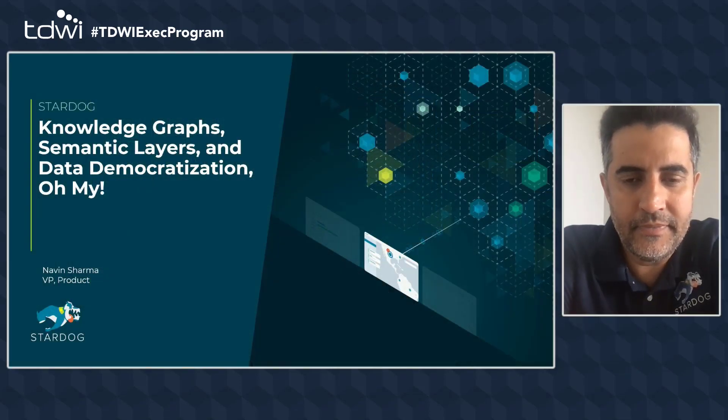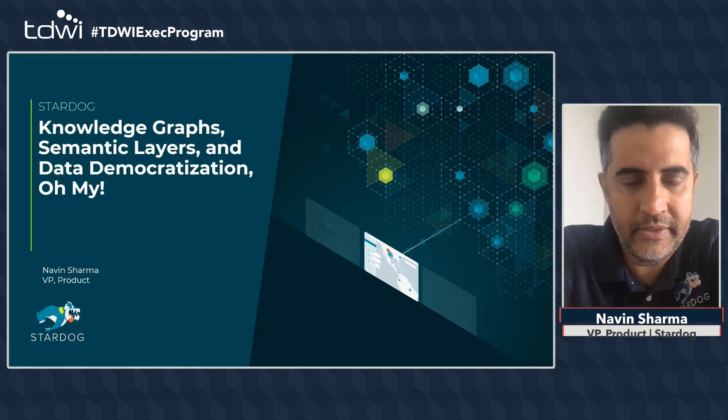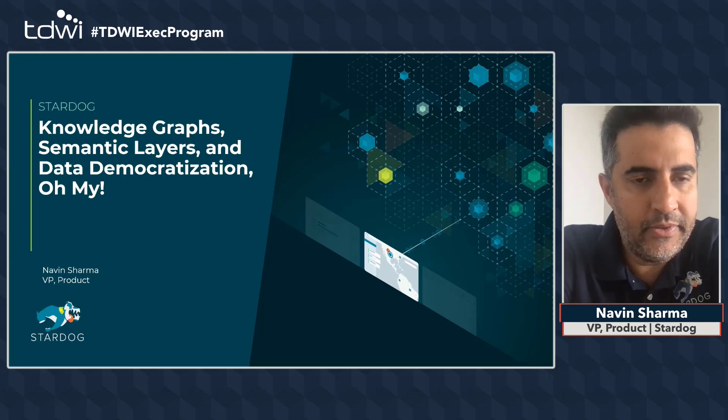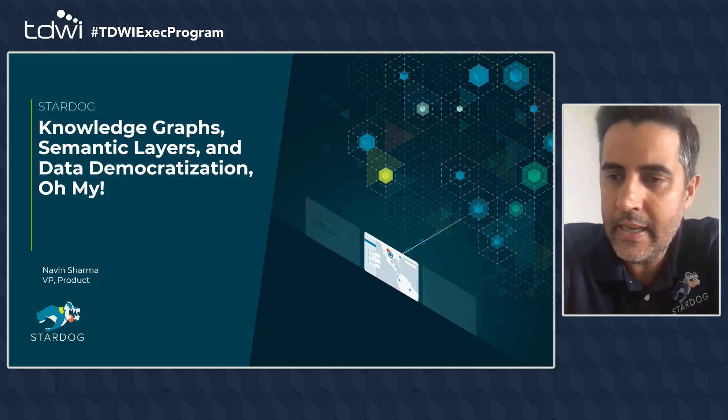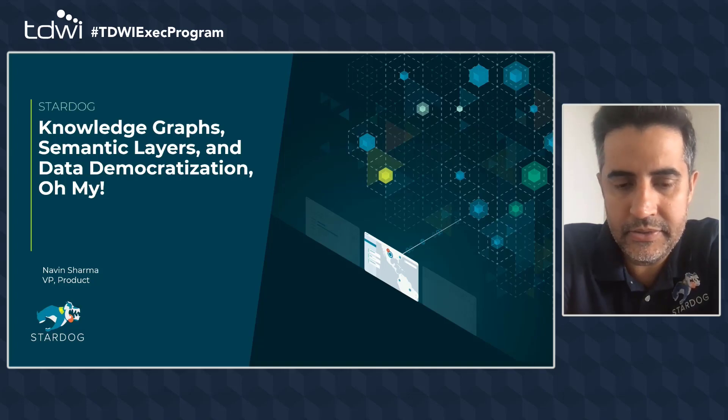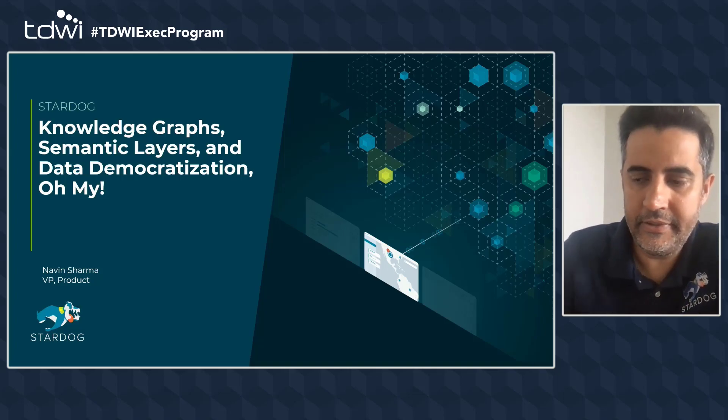Welcome back. Next up we have a spotlight talk from Naveen Sharma, who is Vice President of Product at Stardog. Naveen is going to discuss how a knowledge graph enables businesses to drive rapid insight from increasingly varied and changing data resources. Thank you, Chris. I'm the VP of Product here at Stardog, and I'm here to talk about knowledge graphs, semantic layers, and how they enable data democratization in this new modern data world.